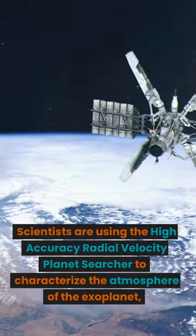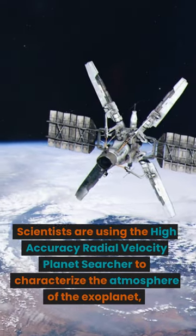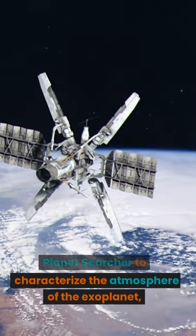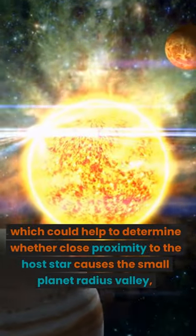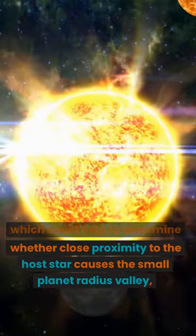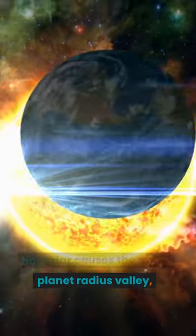Scientists are using the high-accuracy radial-velocity planet searcher to characterize the atmosphere of the exoplanet, which could help to determine whether close proximity to the host star causes the small planet radius valley.